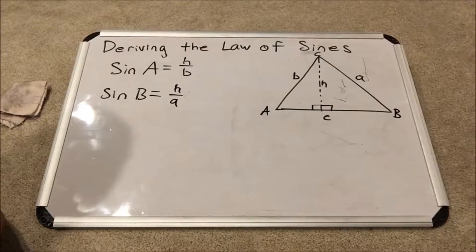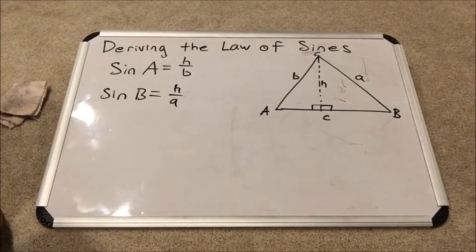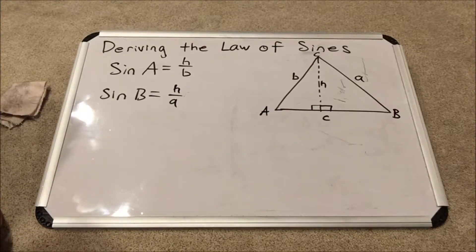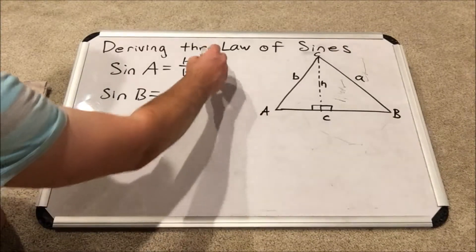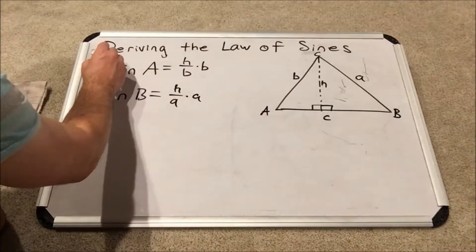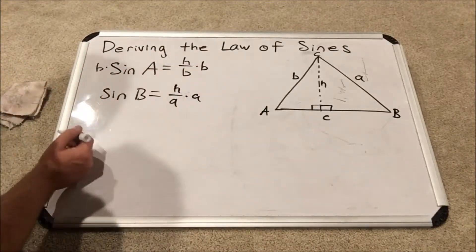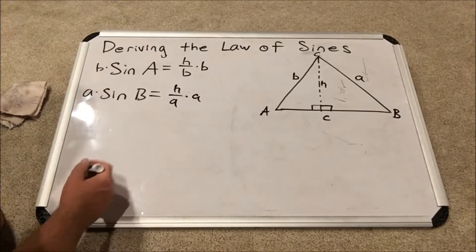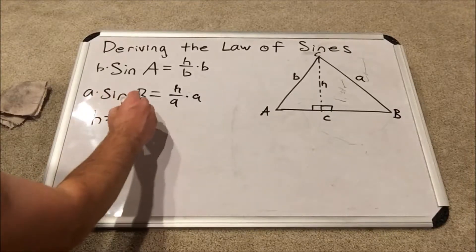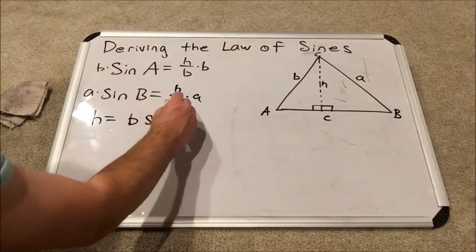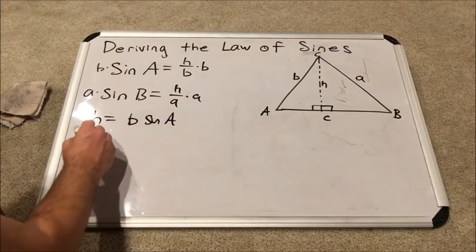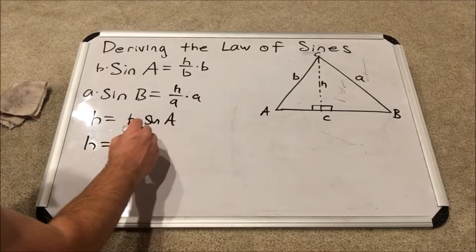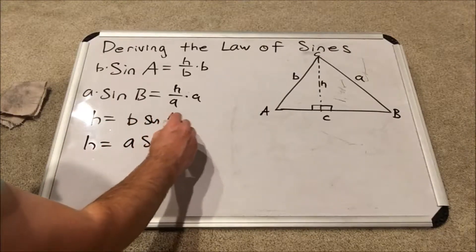Now what I'm going to do is I'm going to solve each of these expressions for H. So that involves multiplying both sides by the denominator of that fraction on the right. So what we have now is H equals B times sine A, and H equals A times sine B.